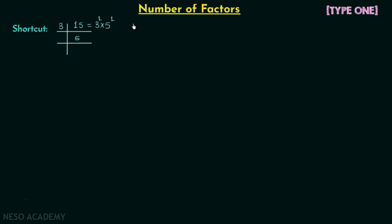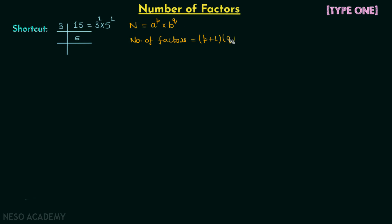The standard form is: N = a^p × b^q, where N is the number whose total number of factors we want to find, a and b are the prime numbers, p is the power of the first prime number, and q is the power of the second prime number. When we have this standard form, the total number of factors equals (p + 1) × (q + 1).